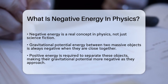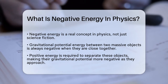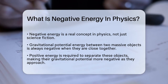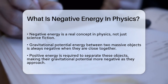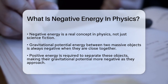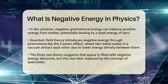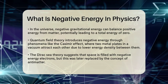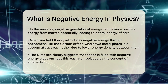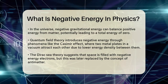In the context of the entire universe, this negative gravitational energy can balance out the positive energy from matter. In fact, some models suggest that the total energy of the universe could be exactly zero, with positive energy from matter canceled out by negative energy from gravity.